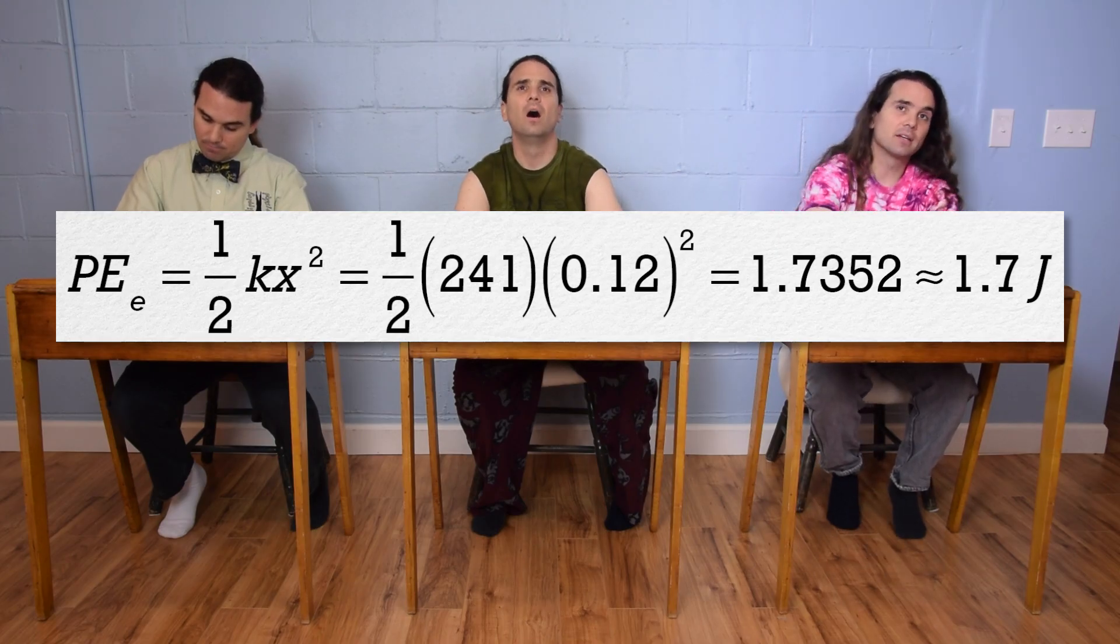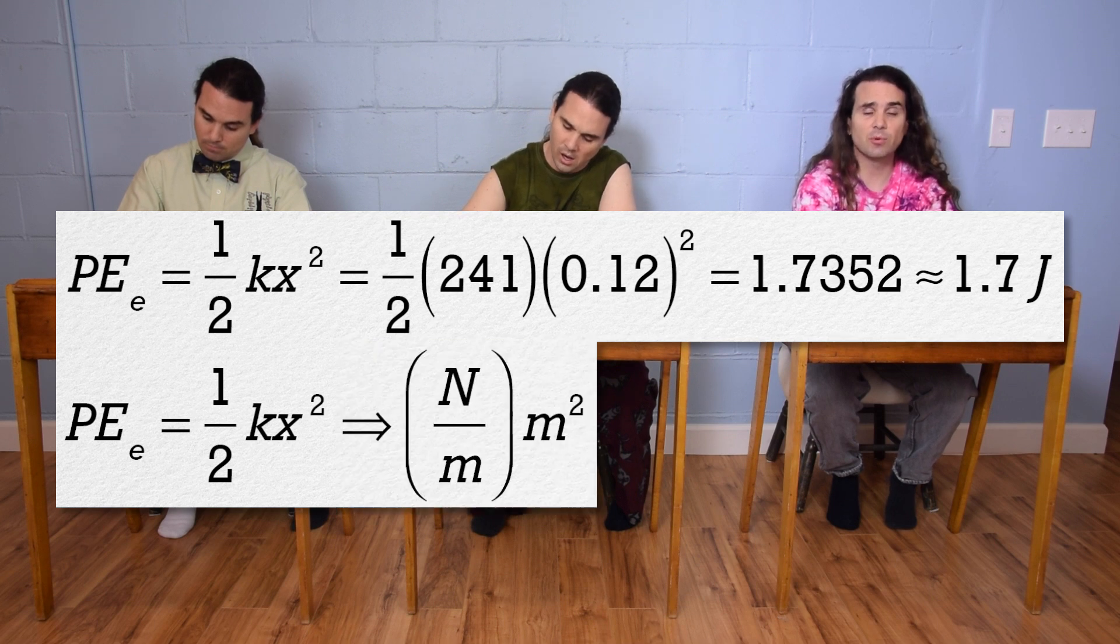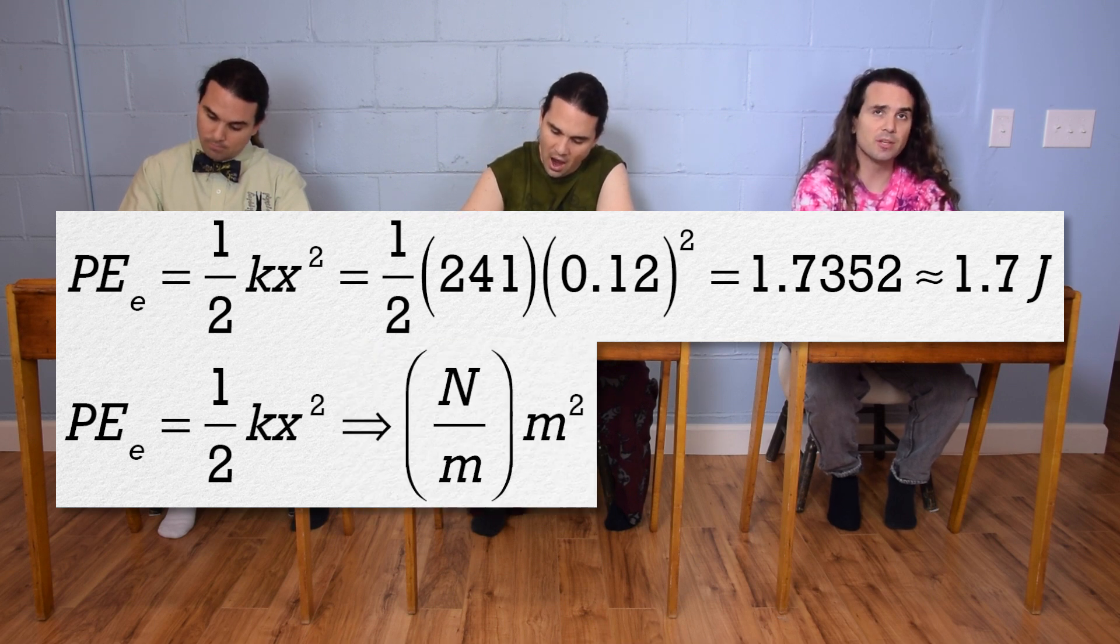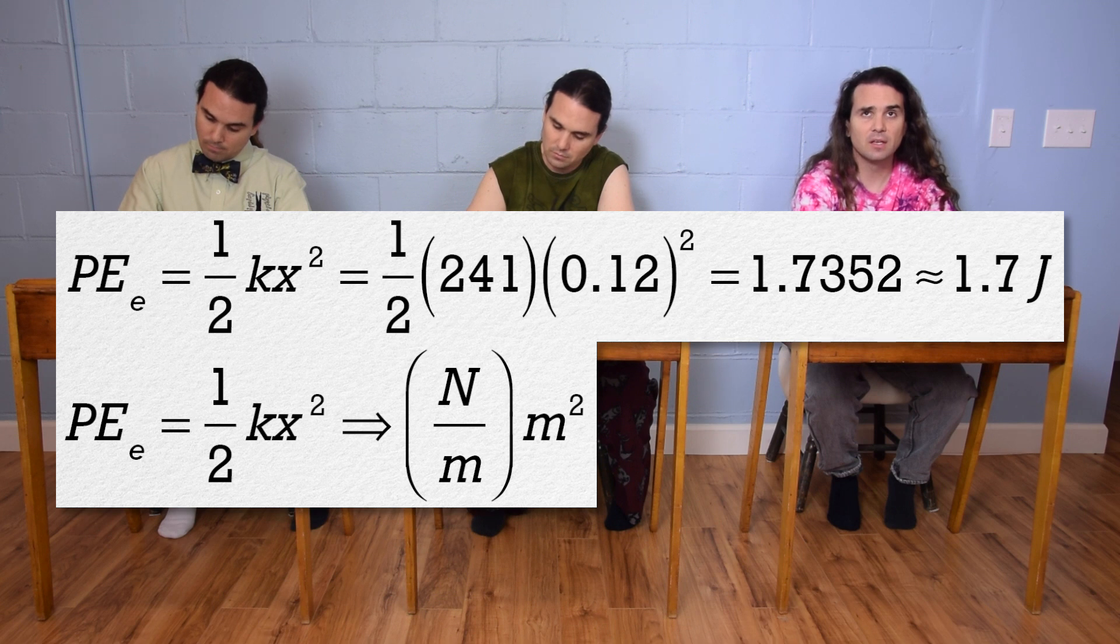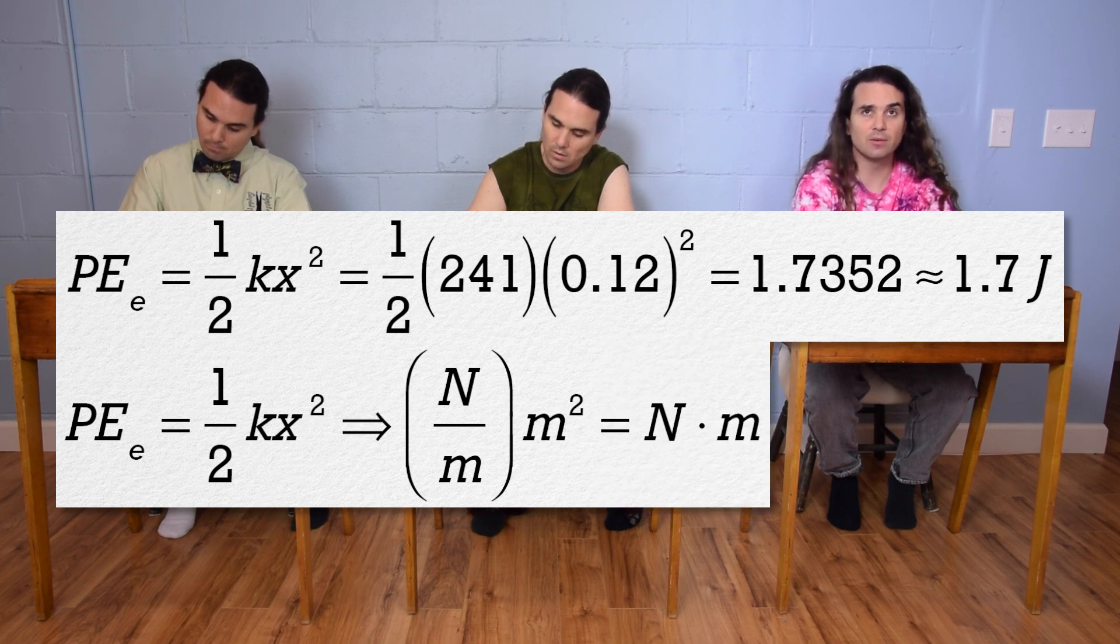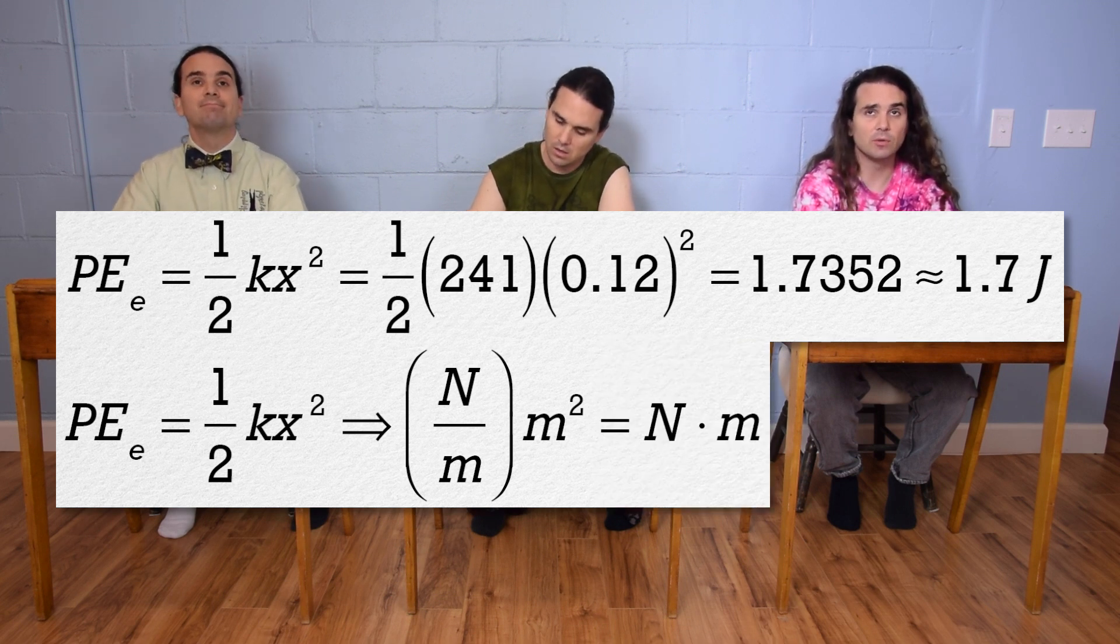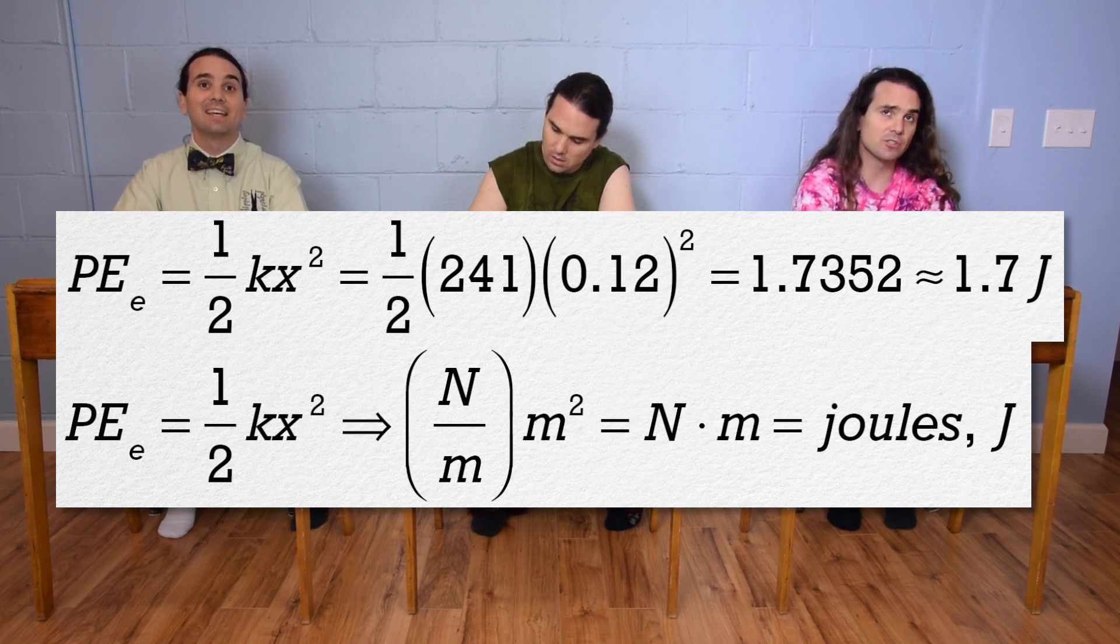Okay. Well, the spring constant is in newtons per meter, which is multiplied by meters squared. Meters cancel out and we are left with newton meters, which is joules. So the energy stored in the spring is 1.7 joules.